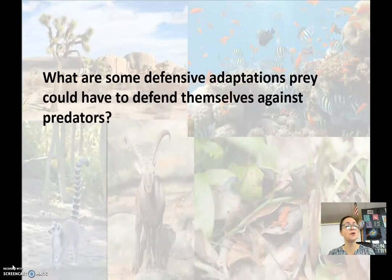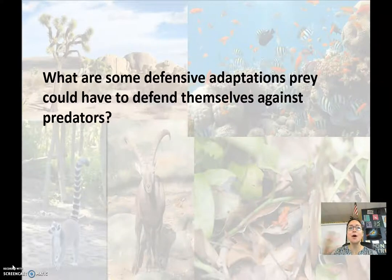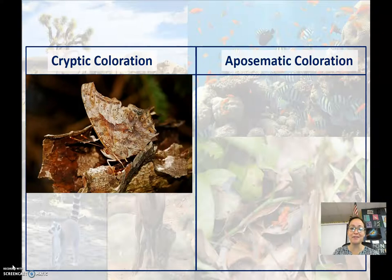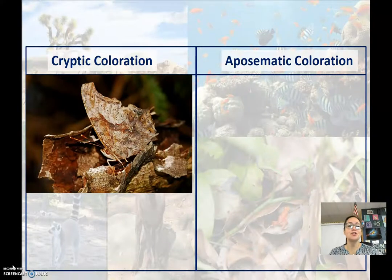Prey have evolved certain defensive adaptations to help protect themselves against predators. You can probably brainstorm some ideas because it's kind of like common sense at this point in your life. One of them would be camouflage — here we're going to call it cryptic coloration.